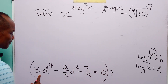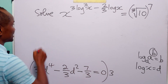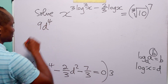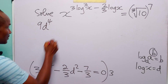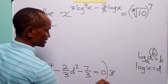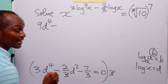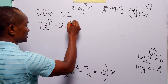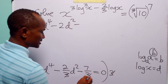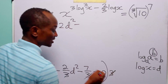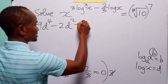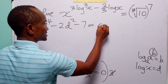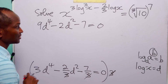3d to the power 4 multiplied by 3 gives us 9d to the power 4, minus 2d squared, minus 7, is equal to 0.